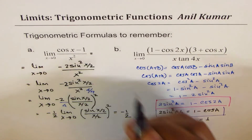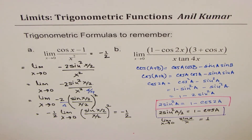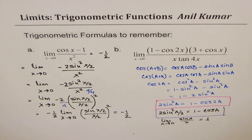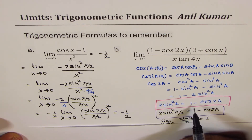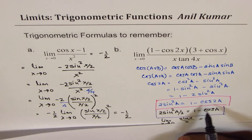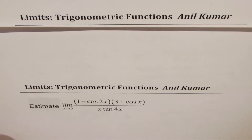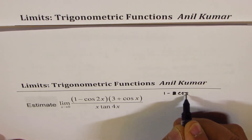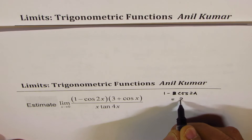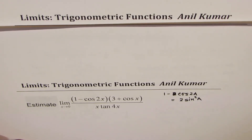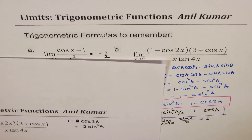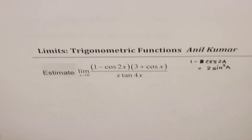So the limit of this function is minus one-half. That is how you find the limit, and I hope this derivation is absolutely clear. Now we'll take up the solution of part B, knowing fully well that we are going to use the formula 1 minus cos 2a equals 2 sin squared a. So here is the equation. 2 times sin squared a equals 1 minus cos 2a — that is the formula we have derived, and we are going to use it to solve the next question.